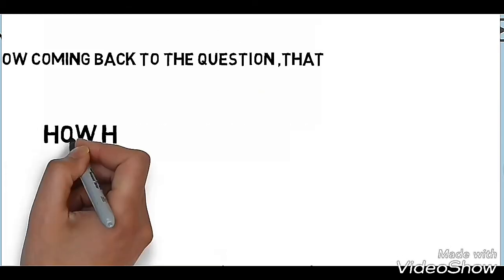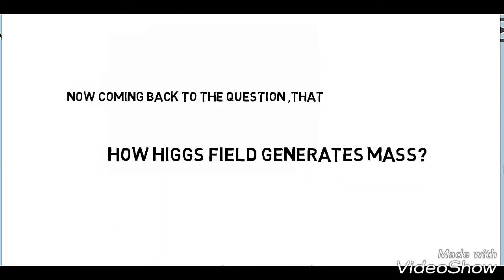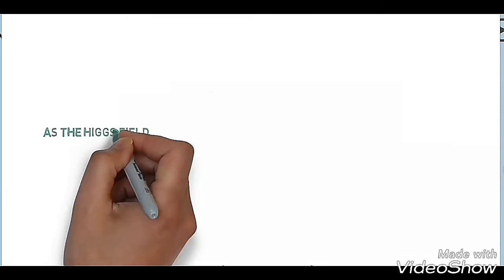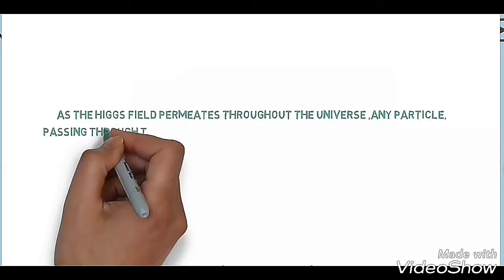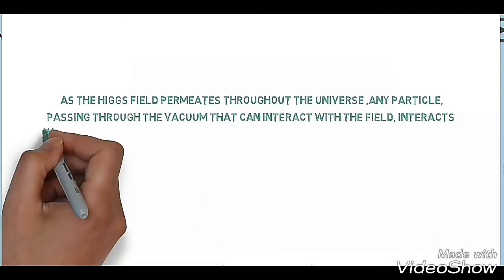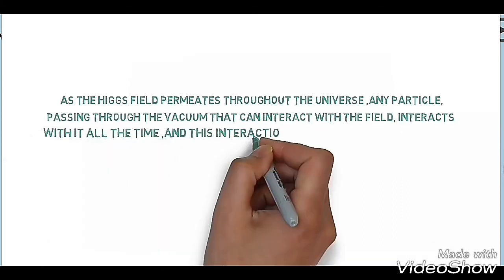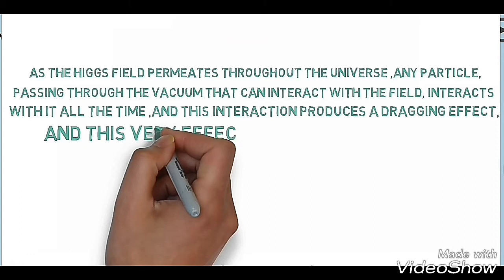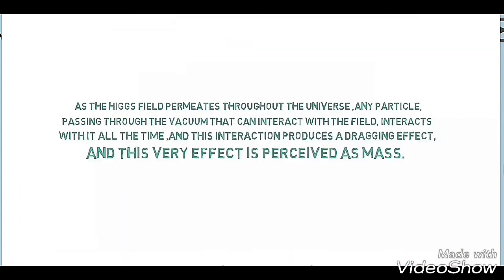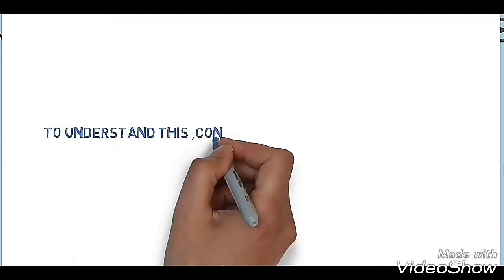Now coming back to the question: how does Higgs field generate mass? As Higgs field permeates throughout the universe, any particle passing through the field that can interact with the field interacts with it all the time. And this interaction produces a dragging effect. And this very effect is perceived as mass.